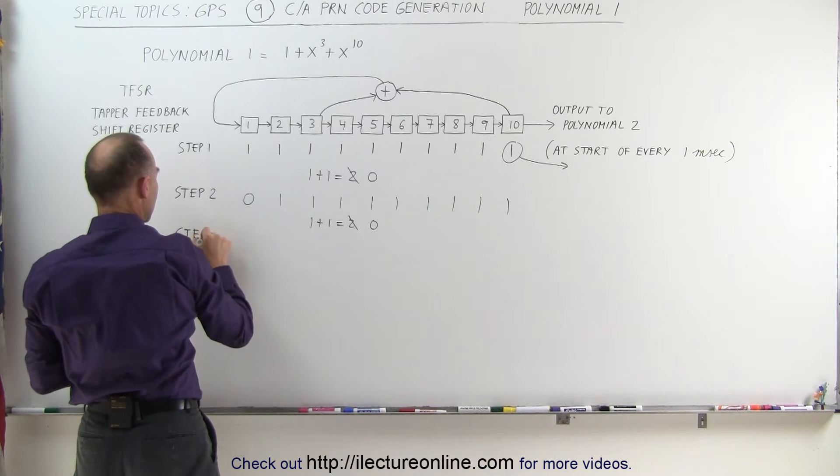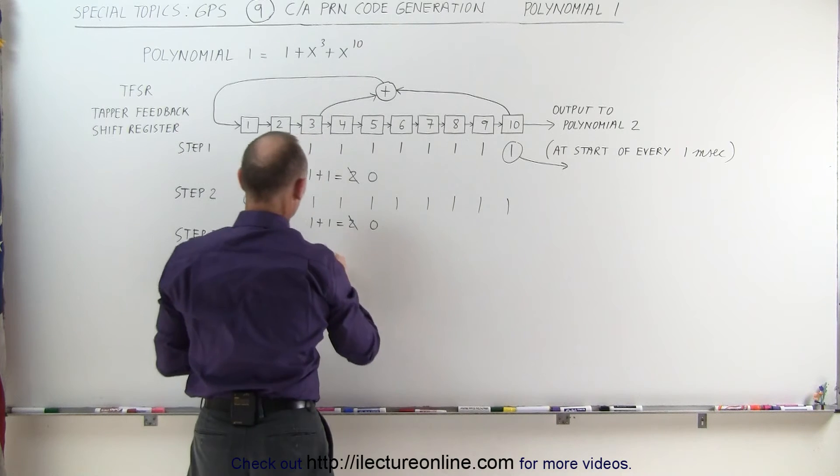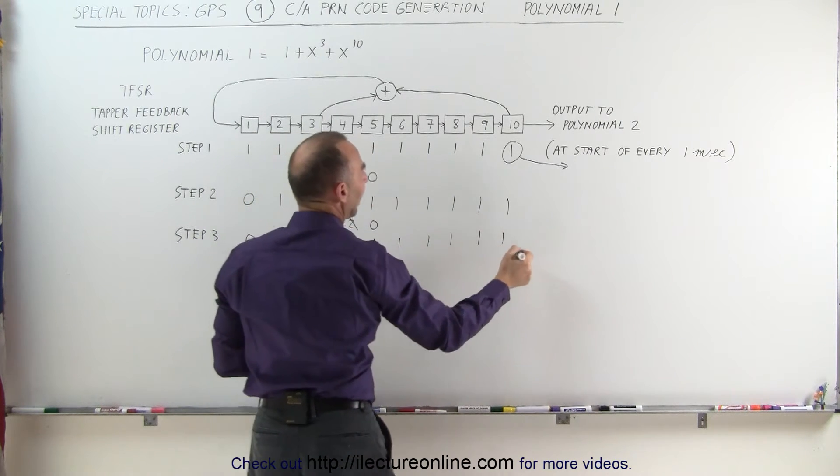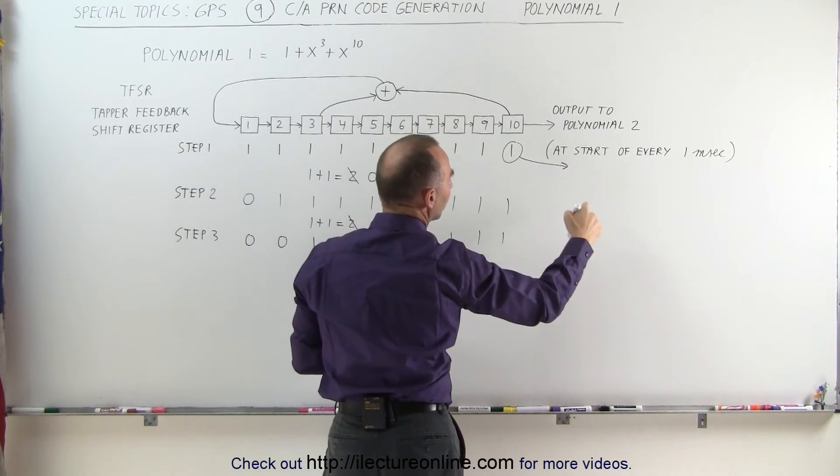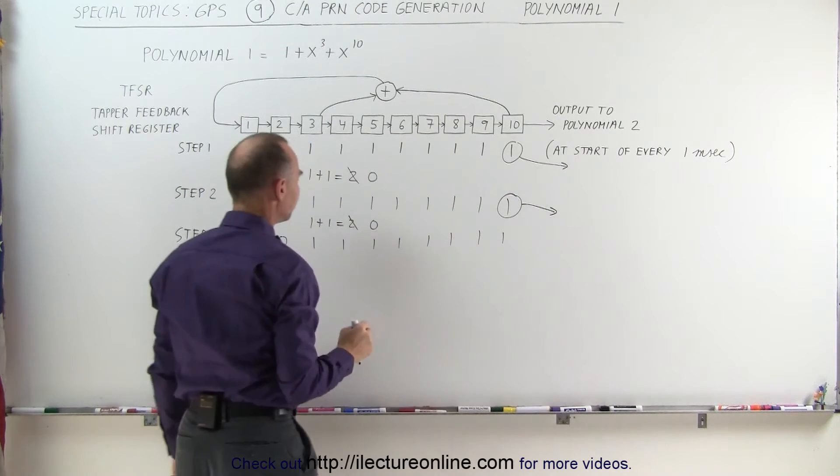On step 3, we'll get a 0, a 0, and everything else will be 1, 1, 1, 1, 1, 1. And again, the 1 gets shipped over to polynomial 2.